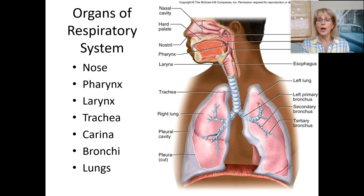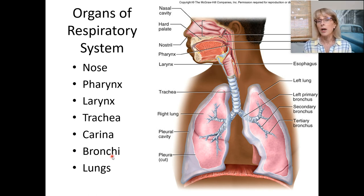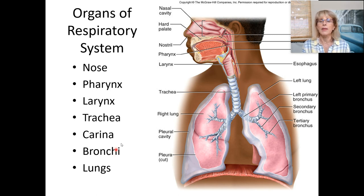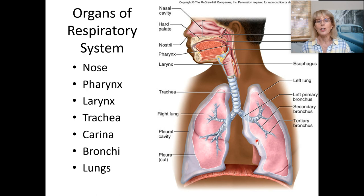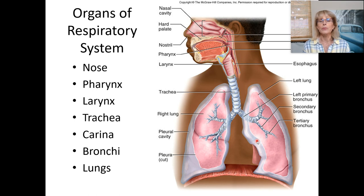After the carina, the two airways that result are called primary bronchi — one would be called a bronchus, but the plural is bronchi. There are primary bronchi and then secondary bronchi, which we'll get to in the next lecture. Finally, air goes down to the lungs, and then air goes right back out the way it came in. That's the overview.